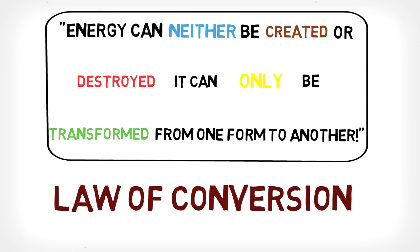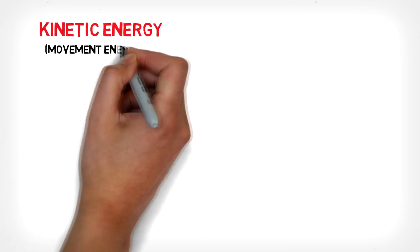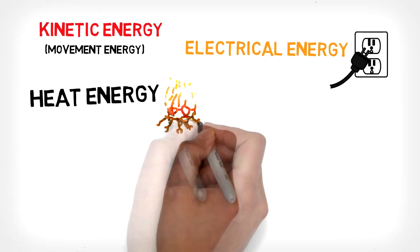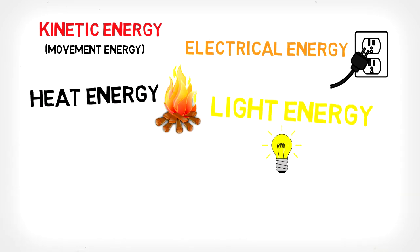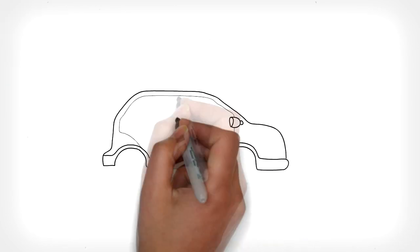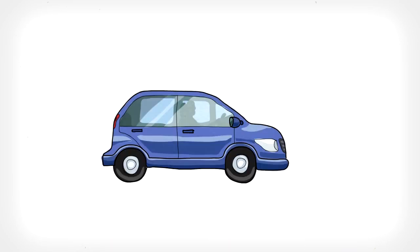There are many different forms of energy. For example, we have kinetic energy, which is movement energy. We also have electrical, heat, light, nuclear, and chemical energy. If we for example take a look at a car, we can see...